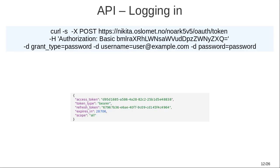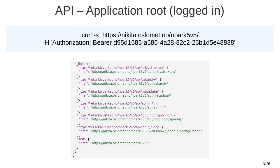So when you want to log on, you have to do that with a POST request. The authorization endpoint is protected with basic authentication — it comes this way out of the box in Spring. So you need to have a password to get access to it, then provide the username and password you're trying to log on as. You get back an access token along with information about its validity in seconds. Hitting the API root as a logged-in user, you're going to see a number of new endpoints providing additional functionality being exposed.